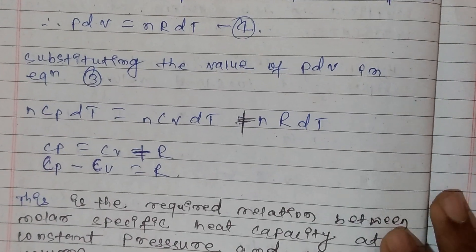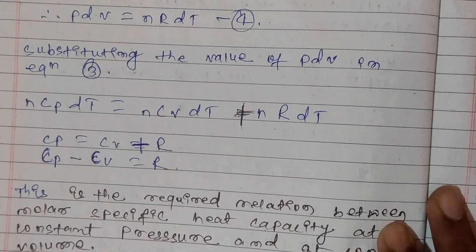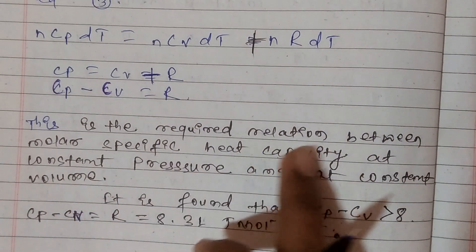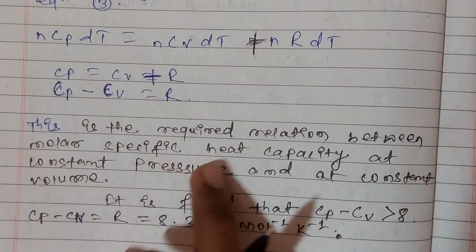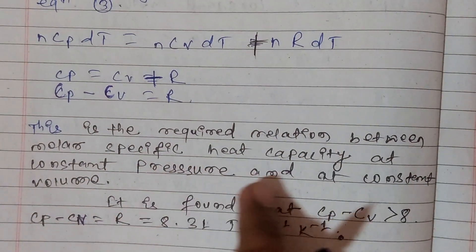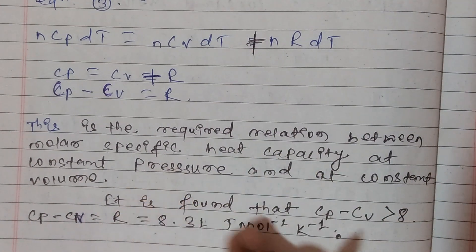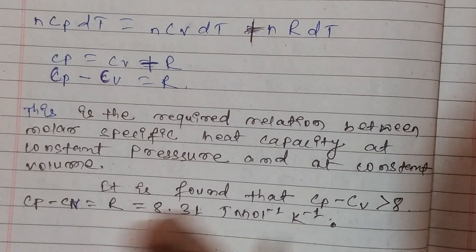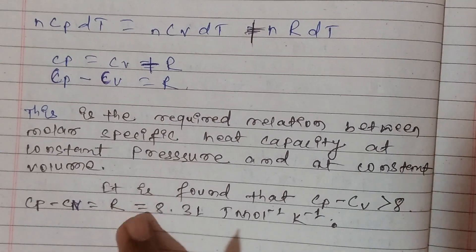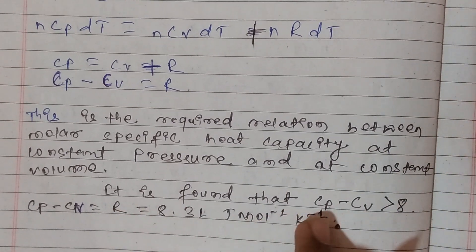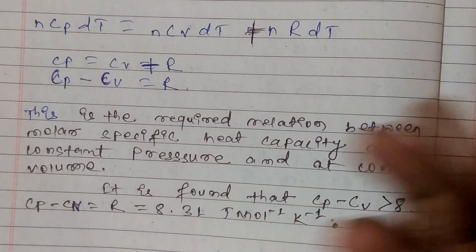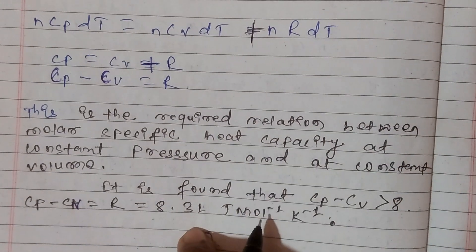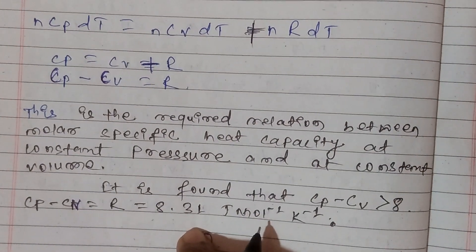So CP minus CV equals R. This is the required relation between molar specific heat capacity at constant pressure and at constant volume. It is found that CP minus CV equals R equals 8.3 joule per mole per Kelvin. This was all — it's an important 4-mark question. Thanks for watching.